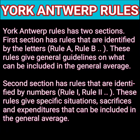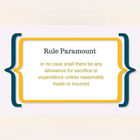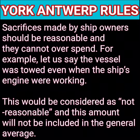The third part is Rule Paramount. While all the other rules in York Antwerp Rules are named either with a number or an alphabet, this one rule is named differently because it is paramount to all the rules. Rule Paramount says: in no case shall there be any allowance for sacrifice or expenditure unless reasonably made or incurred. Sacrifices made by the ship owner should be reasonable and they cannot overspend.